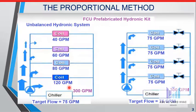The targeted flow for each coil shall be 75 GPM. But because it is an unbalanced system, near the circulator the nearest coil to the circulator will get 120 GPM.